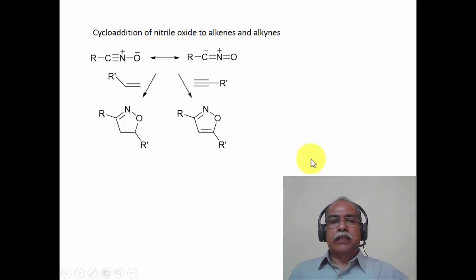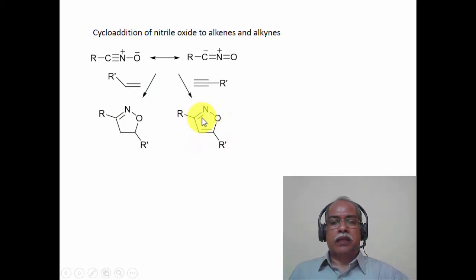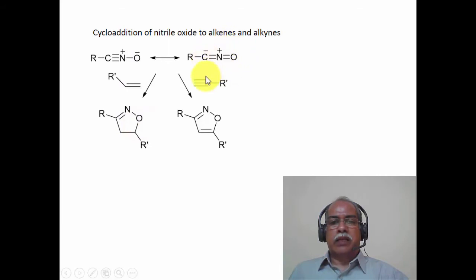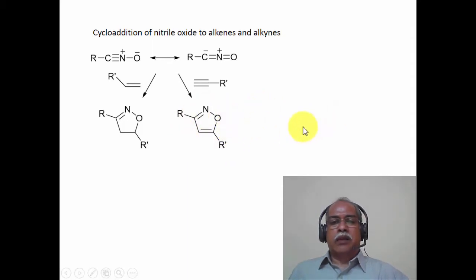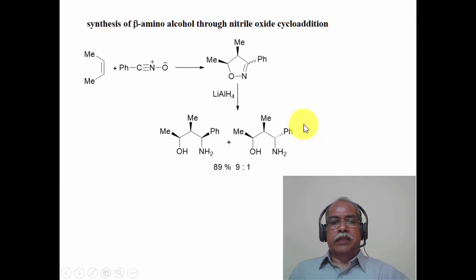The cycloaddition reactions of nitrile oxides with alkenes and alkynes are shown here. Reaction of a nitrile oxide with an alkene produces isoxazoline, whereas reaction of the nitrile oxide with an alkyne produces isoxazole as the product, which is an aromatic heterocyclic system formed during the course of the cycloaddition reaction.